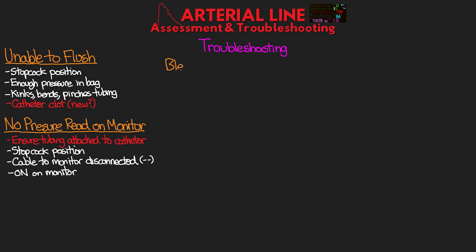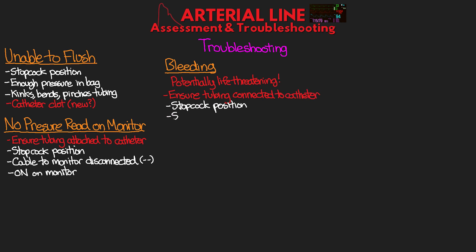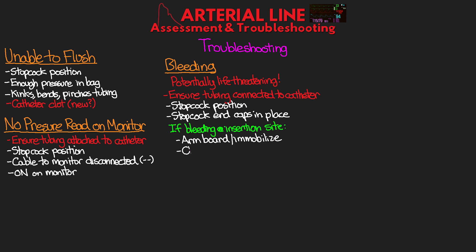Another issue to troubleshoot is bleeding. Significant bleeding can be life-threatening, so check that tubing is connected to the arterial catheter, verify stopcocks and end caps are set correctly. Bleeding from the insertion site can be caused by patient movement — consider using an armboard to immobilize the limb. Check coagulation studies and platelets; patients on heparin or other anticoagulants may experience significant bleeding and require frequent dressing changes or a pressure dressing over the insertion site.